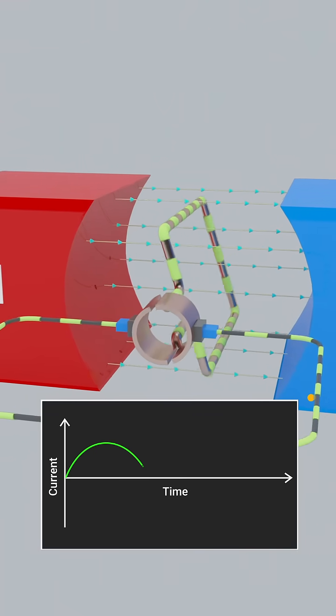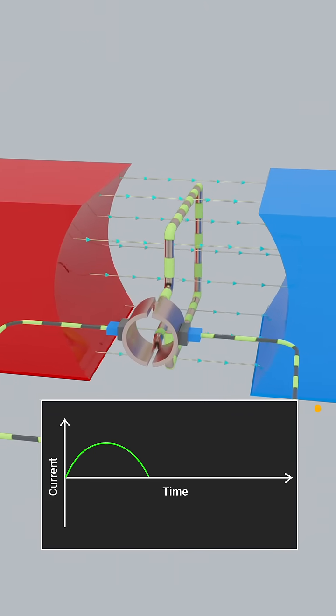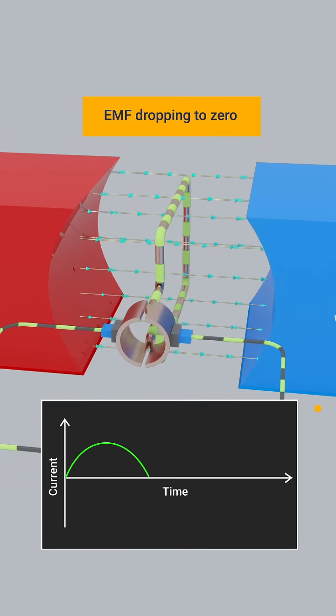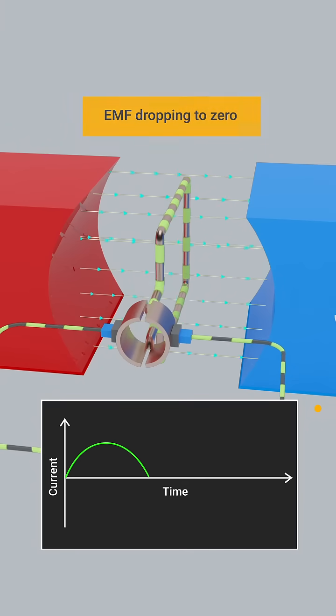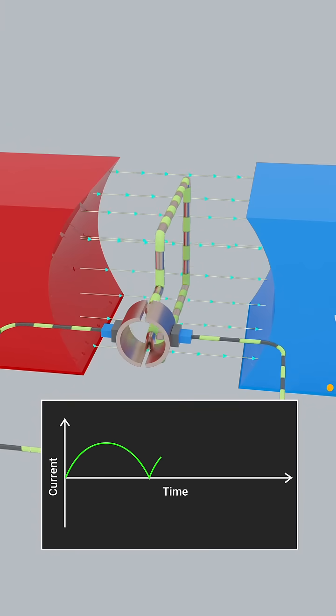As the armature continues to rotate to 180 degrees, the induced EMF drops to zero. At this point, the commutator segments switch the connection of the brushes, ensuring that the current flow continues.